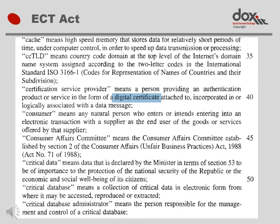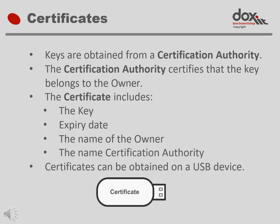The ECT Act uses the name 'certification service provider' when referring to a company selling encryption keys in the form of digital certificates. A certification authority and a certification service provider are exactly the same thing. It is unclear why the ECT Act chooses to use the term certification service provider. The Act defines a certification service provider as a person providing an authentication service in the form of a digital certificate. So let's have a look at what a digital certificate is.